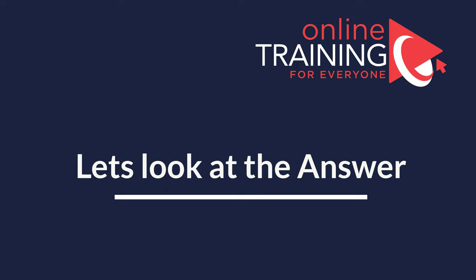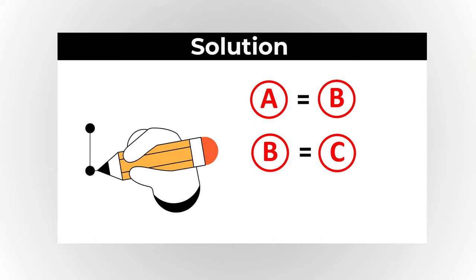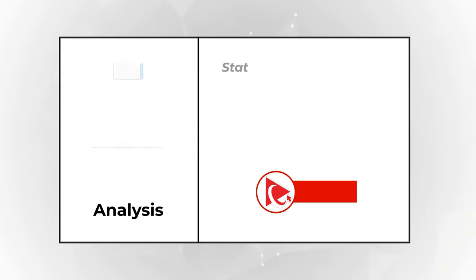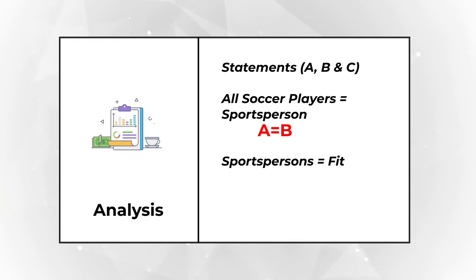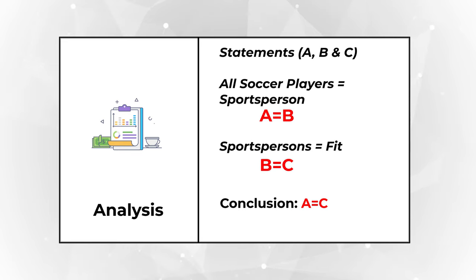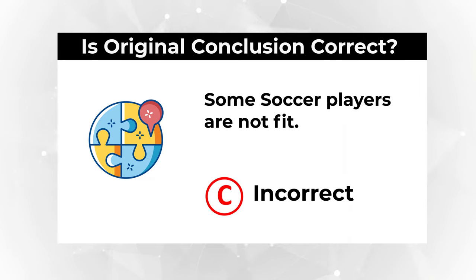In logical reasoning, if A equals B and B equals C, then you can conclude A equals C. The statement 'all soccer players are sportspersons' is A equals B, and 'all sportspersons are fit' is B equals C. Therefore A equals C — all soccer players are fit. The question asks if some soccer players are not fit, which based on the information is not correct. The correct choice is C: incorrect, because all soccer players are fit.